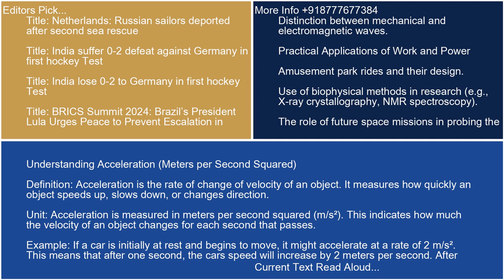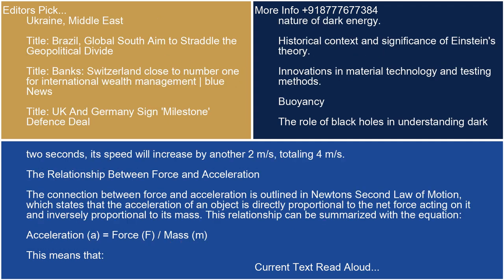Unit: Acceleration is measured in meters per second squared (m/s²). This indicates how much the velocity of an object changes for each second that passes. Example: If a car is initially at rest and begins to move, it might accelerate at a rate of 2 meters per second squared. This means that after one second the car's speed increases by 2 m/s, and after 2 seconds its speed increases by another 2 m/s, totaling 4 meters per second.